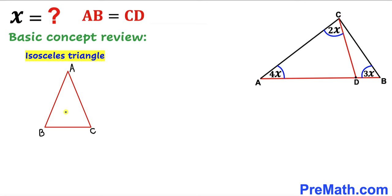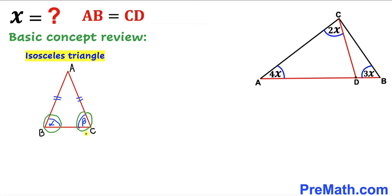In triangle ABC, if side length AB is equal to side length AC, then this triangle is an isosceles triangle. The angle opposite to one equal side I'll call alpha, and the angle opposite to the other equal side I'll call beta. These two angles alpha and beta are congruent in an isosceles triangle.